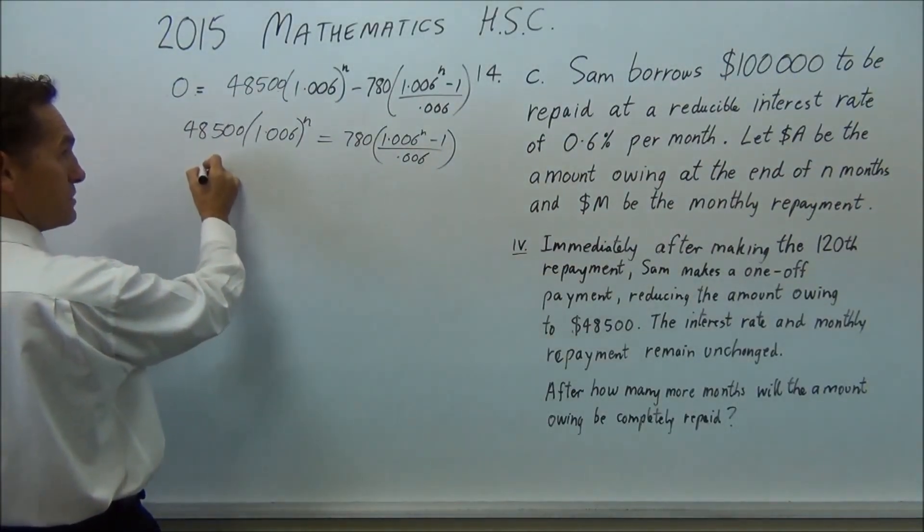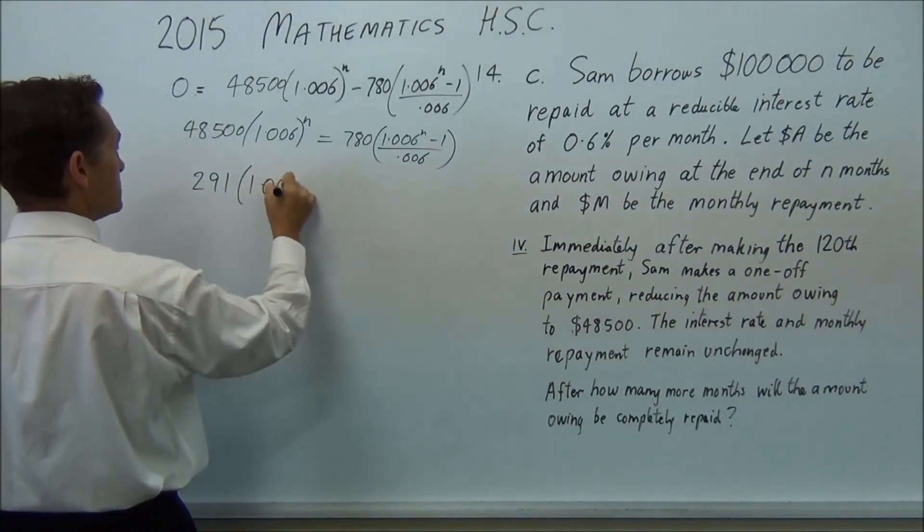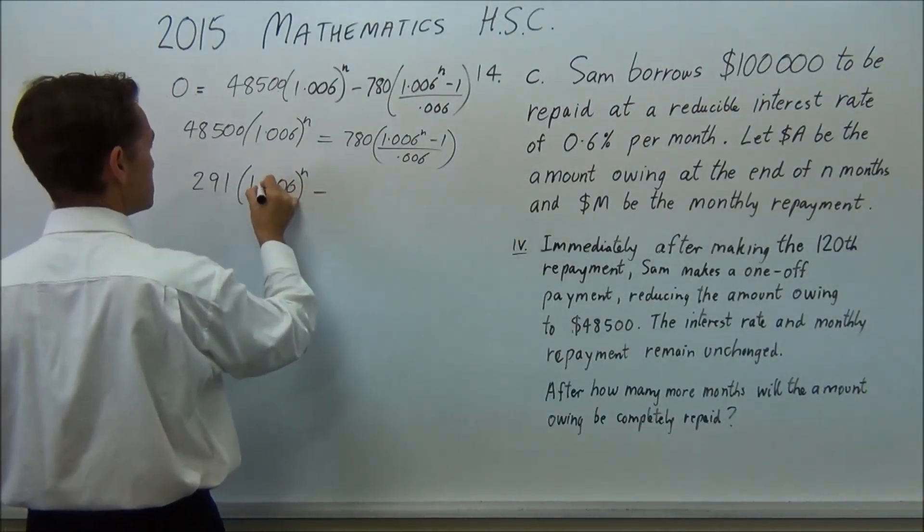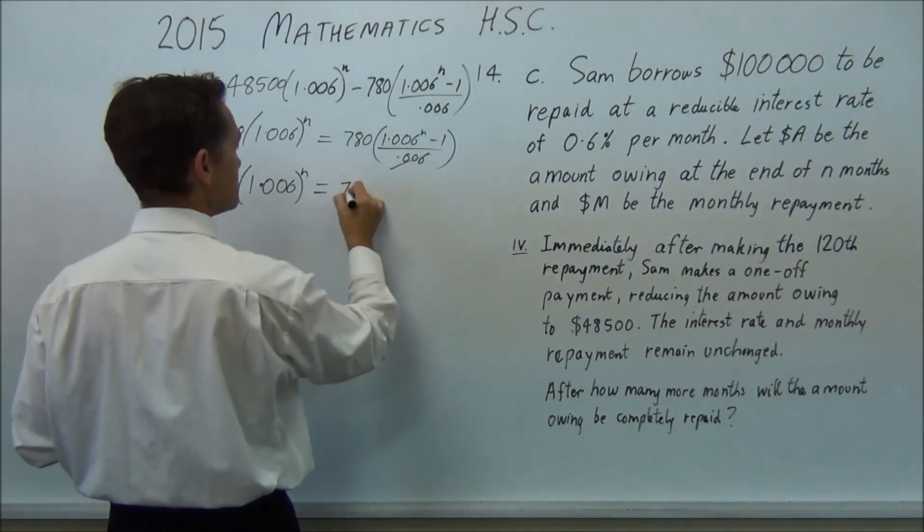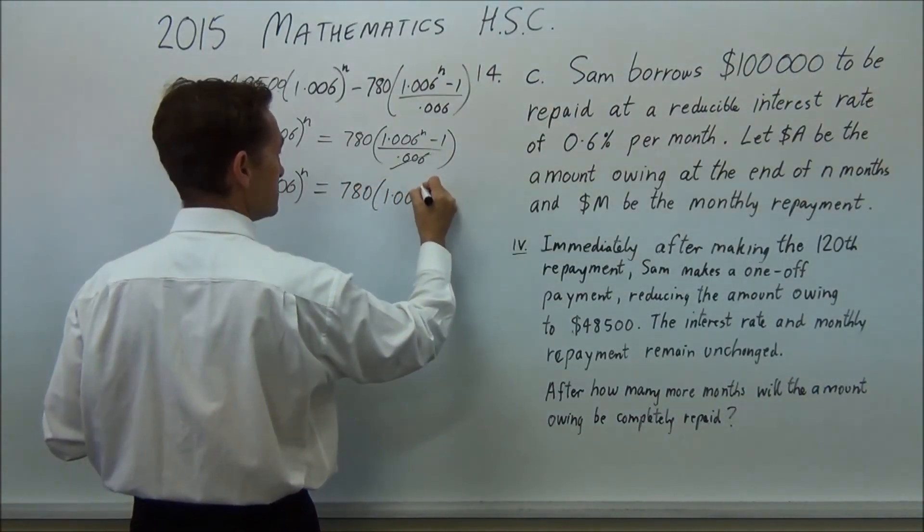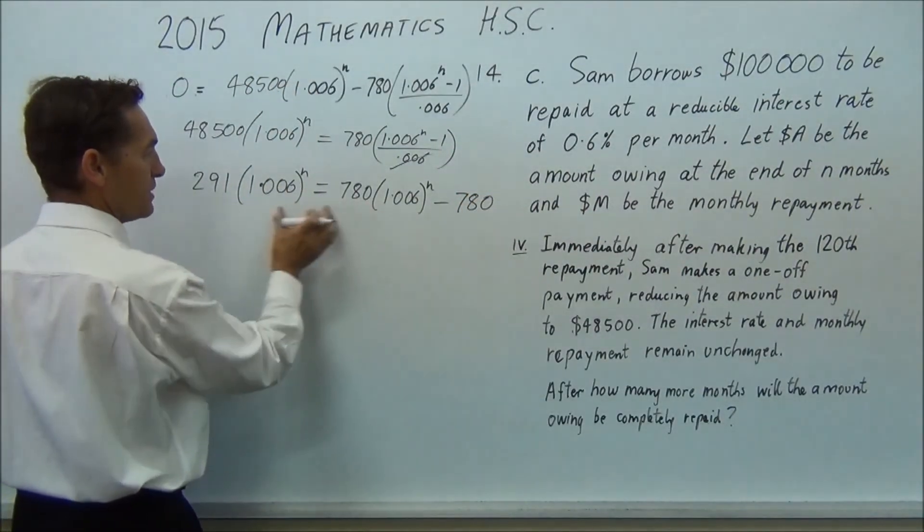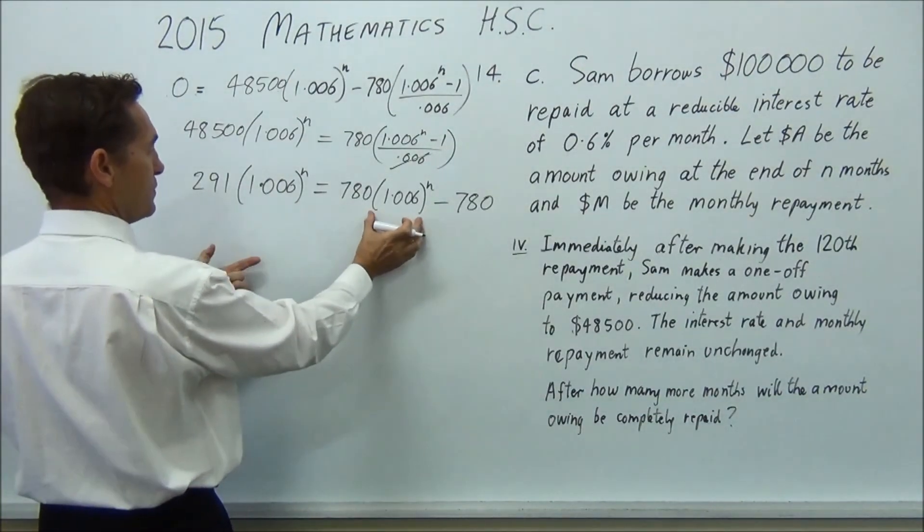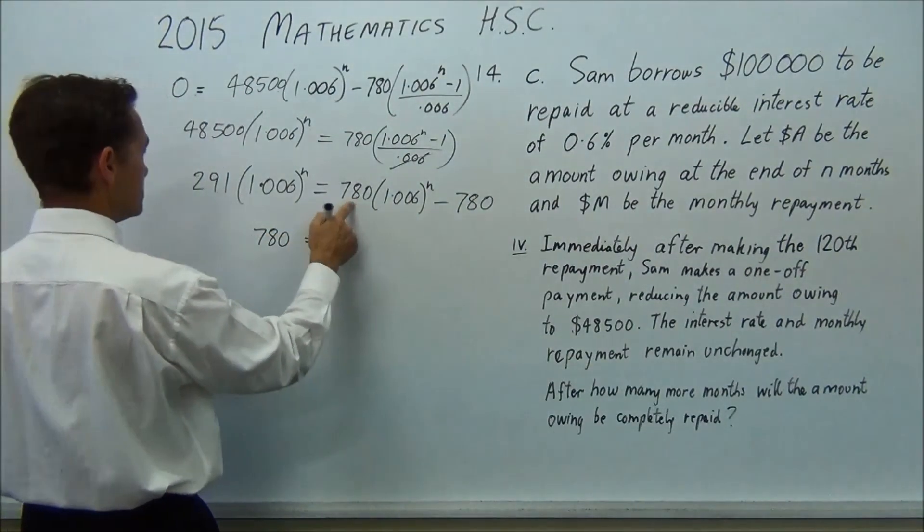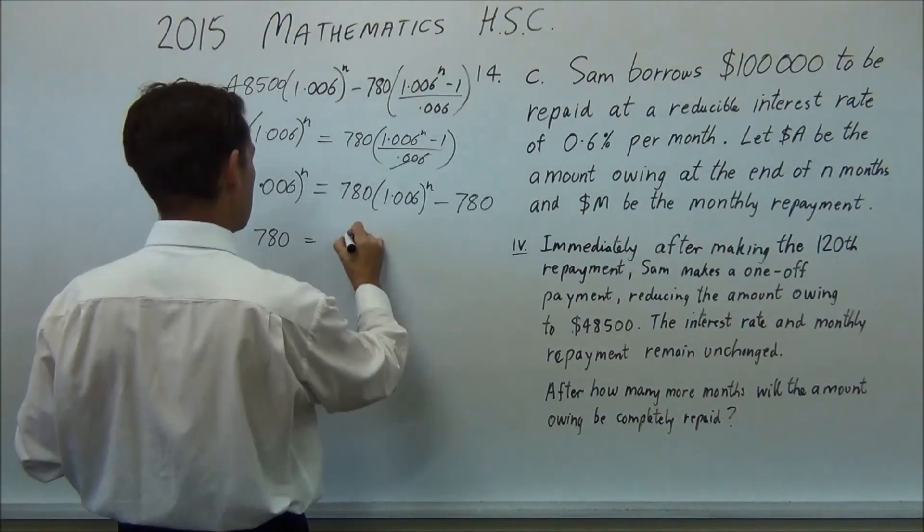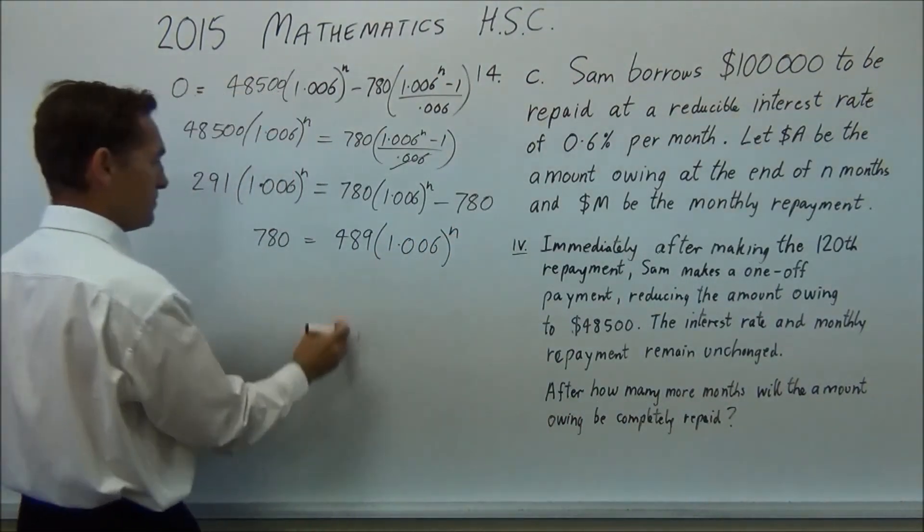Multiply both sides by 0.006 to get rid of that off the bottom. So if you multiply this across here, you should get 291. 291 times 1.006 to the n equals, and now I'll split this up because that's now gone, because we've multiplied it over there. So we're going to get 780 times 1.006 to the n minus 780. Okay? We just want the n part, we want that together. So if we move these across here, or actually move that across there and move the 780 over here. So we get 780 equals 780 take 291 is 489, all to the power of n. Divide by 489.